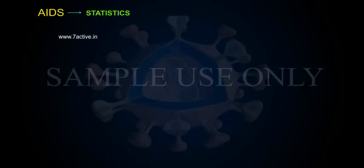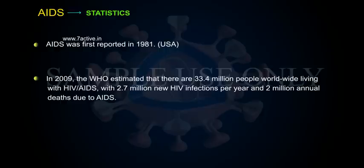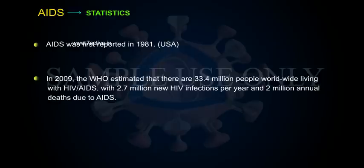AIDS was first reported in 1981. In 2009, the WHO estimated that there are 33.4 million people worldwide living with HIV or AIDS, with 2.7 million new HIV infections per year and 2 million annual deaths due to AIDS.